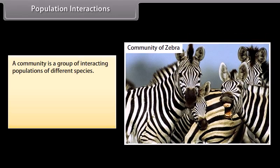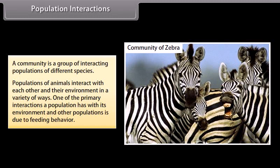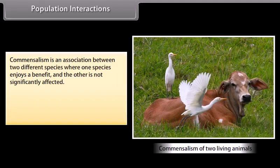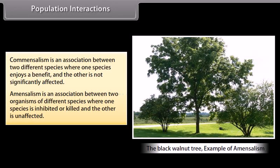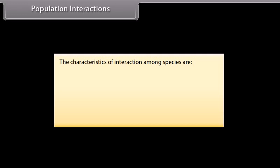Population interactions: a community is a group of interacting populations of different species. Populations interact with each other and their environment in a variety of ways; one primary interaction is due to feeding behavior. Commensalism is an association between two different species where one species enjoys a benefit and the other is not significantly affected. The characteristics of interaction among species are predation, competition, parasitism, commensalism, and mutualism.